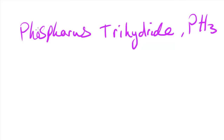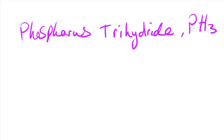In this first question we've got phosphorus trihydride, and what I need to do is work out the number of bonding pairs and lone pairs around the phosphorus in this particular molecule, since phosphorus is going to be the central atom.